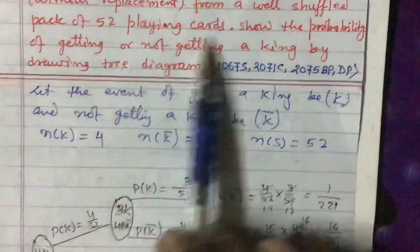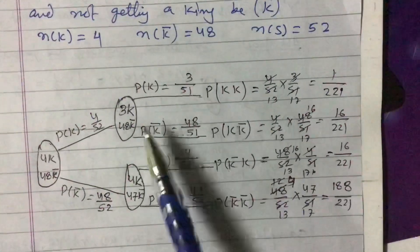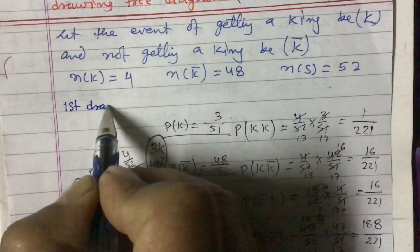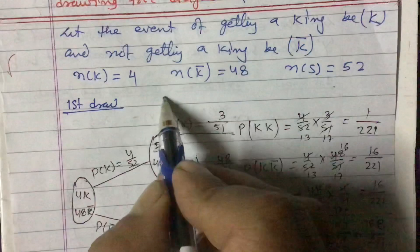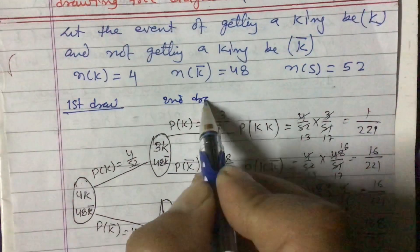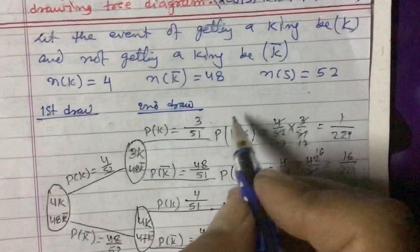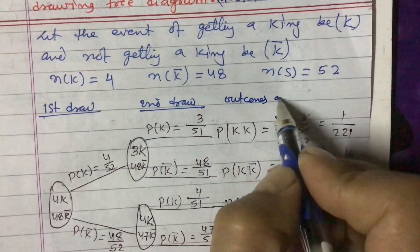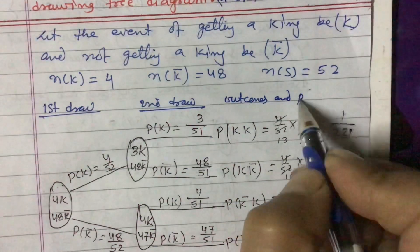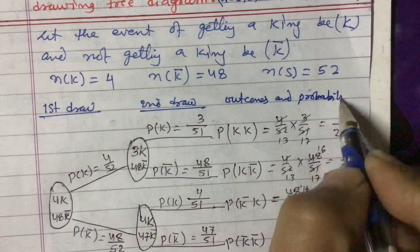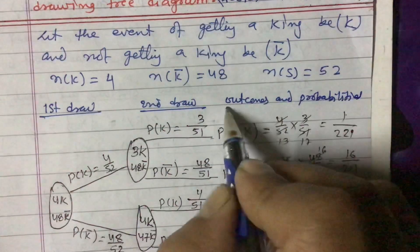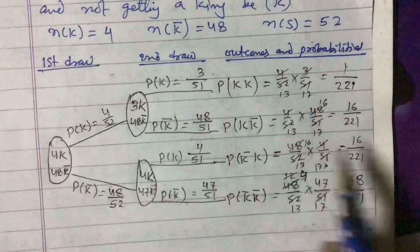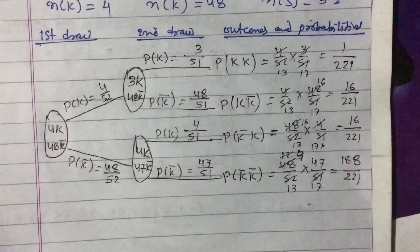In this way we can answer whatever is asked. Now on the tree diagram we label: the left side is the first draw, the right side is the second draw, then we show outcomes and probabilities. These are the outcomes and these are the probabilities — we can show everything in this way in the tree diagram. Thank you for watching this video.